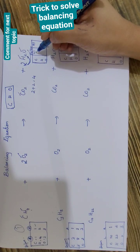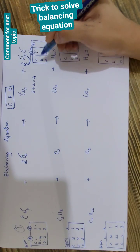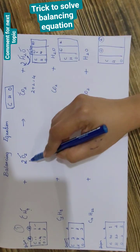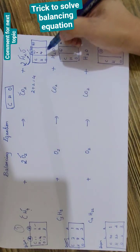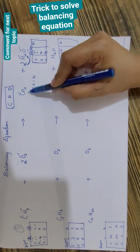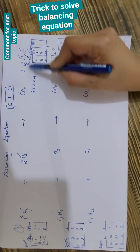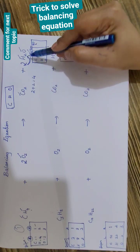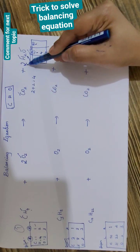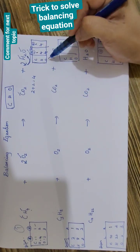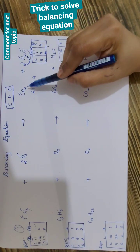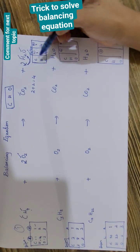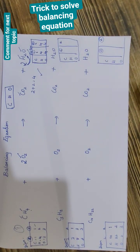So how many carbons on the left side? One. Hydrogens on the left side? Four. Oxygens on the left side? Four. Carbon on the right side? One. Hydrogen on the right side? Two times two — four. Oxygen on the right side? Two plus two — four. So our equation is balanced.